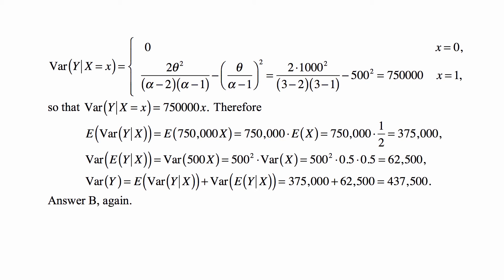Then we use the formula for the unconditional expected value based on conditional variance, and the formula for the variance based on conditional mean and variance. So E[Var(Y|X)] = E(750,000X) = 750,000·E(X). And E(X) = 1/2, so this is 375,000.